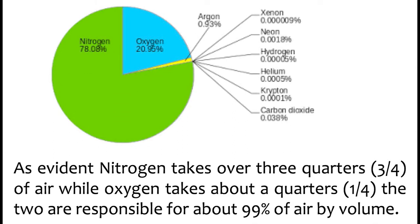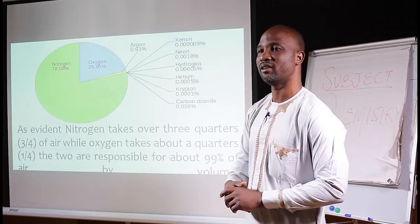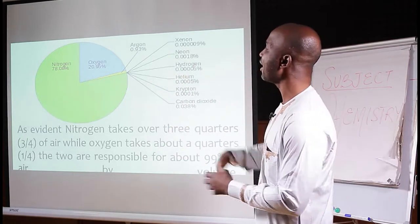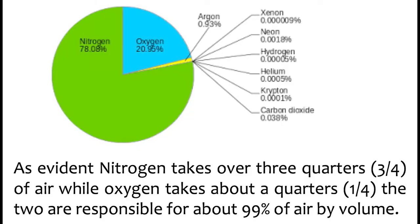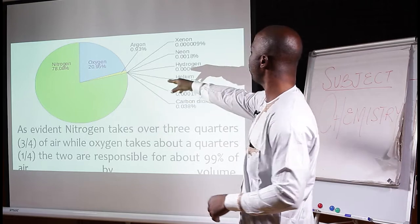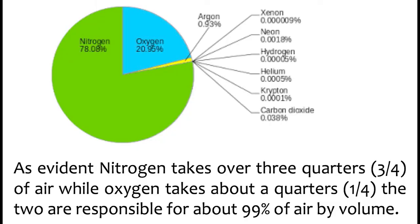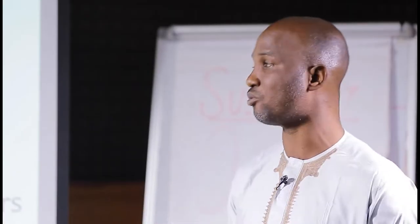There are slight changes as you move from place to place depending on activities that take place in those areas. If you look at the picture, the green zone, which is the largest component, is nitrogen. Nitrogen dilutes other air. Oxygen is about 21%. Then you have your argon, xenon, neon, hydrogen, helium, krypton, carbon dioxide — they all make up the small percentage shown in yellow. So nitrogen takes over three quarters of air, while oxygen takes about one quarter. Together they make up 99% of air by volume.